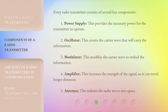Every radio transmitter consists of several key components. First, the Power Supply, which provides the necessary power for the transmitter to operate. Second, the Oscillator, which creates the carrier wave that will carry the information.